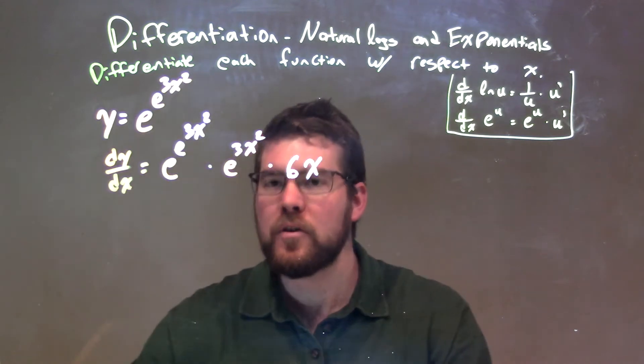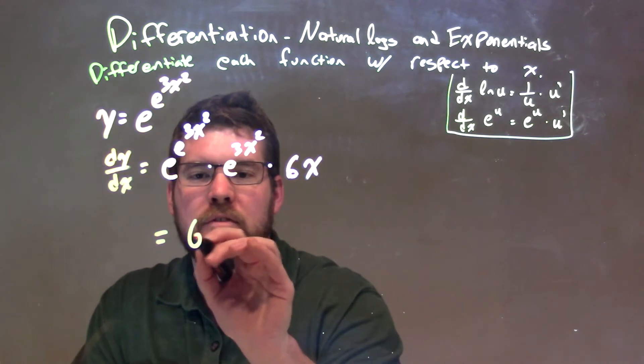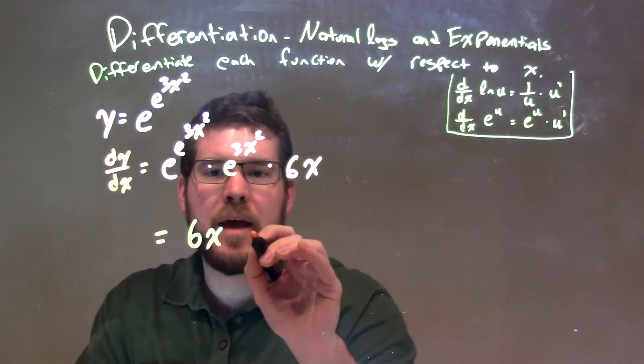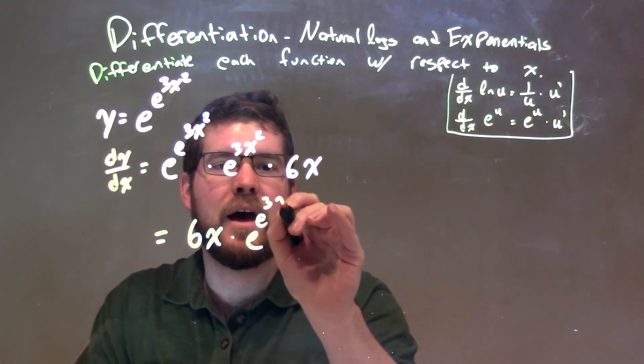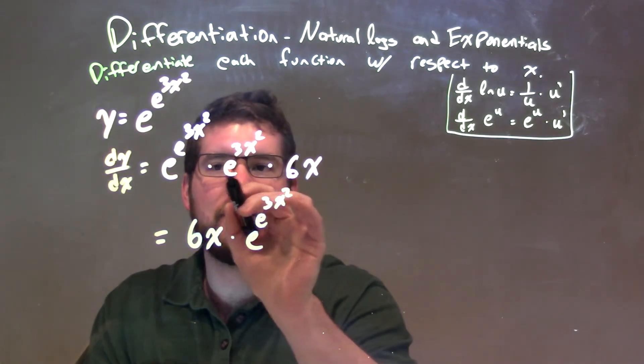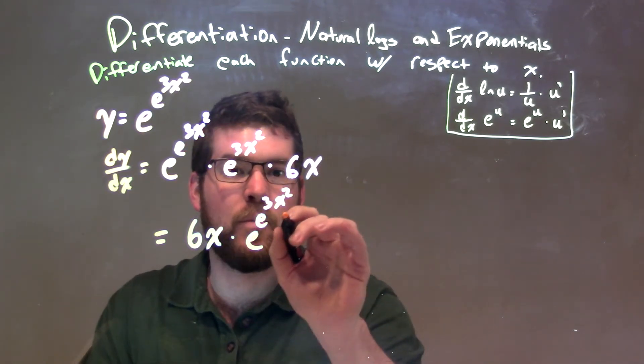So at this point we actually can simplify it a little more. The 6x means put out front, so the 6x here, and then we have e to the 3x squared power. But then when we have the same base, we can add these two exponents and put it in one big power.